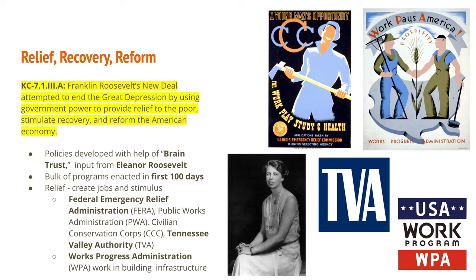The Works Progress Administration, which came a bit later after the first 100 days, focused on building infrastructure — roads, airports, and parks. It was a lot of government spending with the intention of getting money in people's pockets so they would start spending again, which would then make the economy recover.